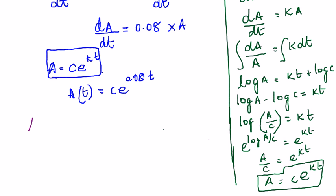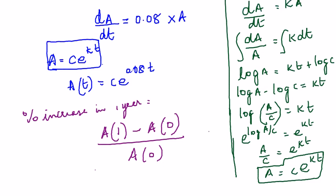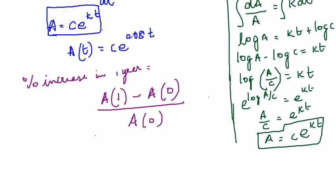We are expected to find the percentage increase in the account in one year. So when you want to find that, it will be the amount at the end of one year minus the amount that was there initially, by the initial amount, into hundred because you want to calculate the percentage.